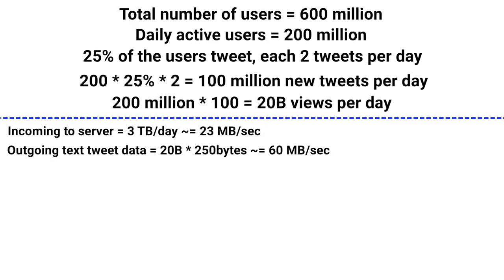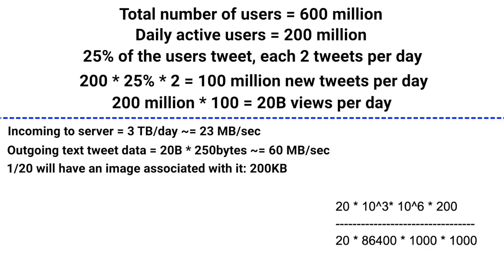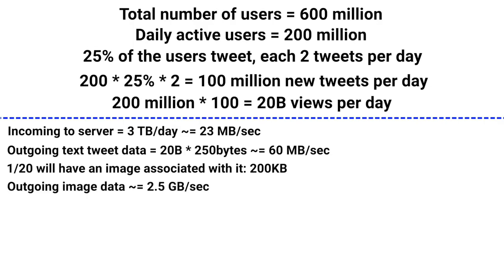Now let's calculate for images. We assumed 1 out of 20 tweets will have an image. So: 20 billion × 200 KB ÷ 20 ÷ 86400 ÷ (1000 × 1000) — converting KB to GB — comes to nearly 2.5 GB per second outgoing data for images.